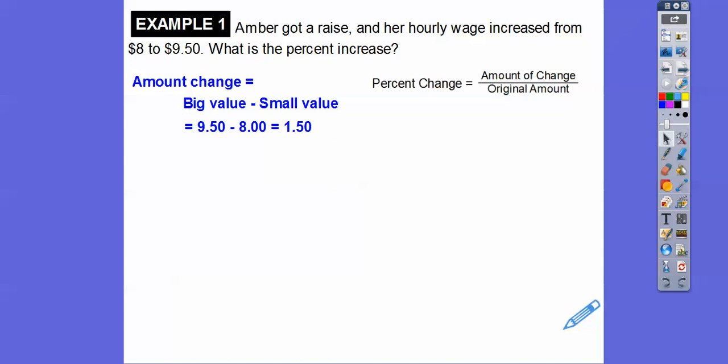And then we take the amount change, that's the top number, $1.50, and divide it by the original number, the first number, $8. So we're going to do $1.50 divided by $8. We get 0.1875. I'm going to round that up to about 19%. It's actually 18.75%. But the percent increase for Amber, she got about a 19% raise.